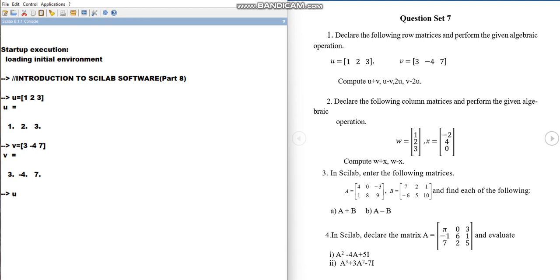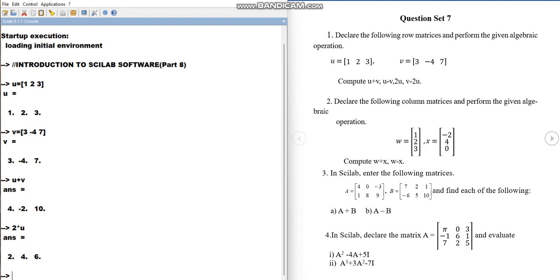If you want to do the operation u plus v, same thing. 2u means the scalar multiplication, 2 star u. So each entry of u will be multiplied by 2 and v minus 2u. So it is v minus 2 star u. So this is the answer, which is again a row matrix.